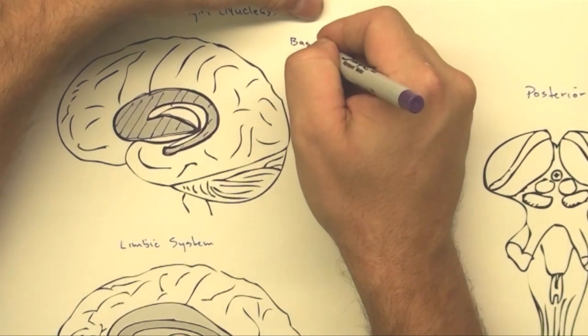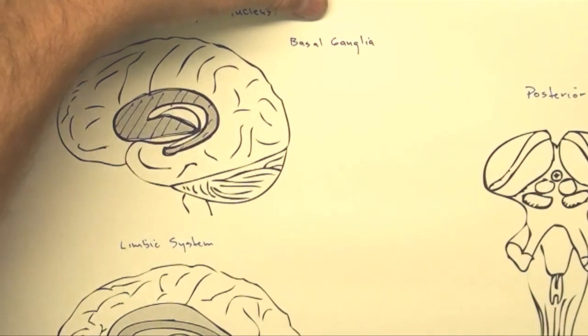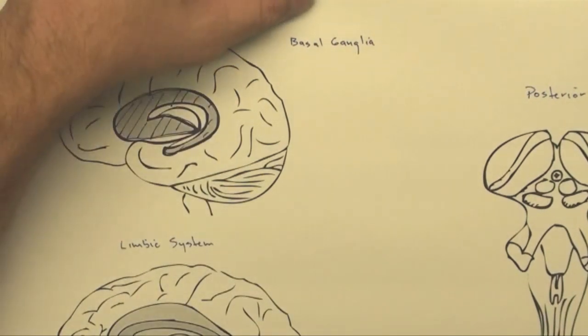And what the basal ganglia does is it's kind of the boss of the motor system. Now we generally think of the motor system, we generally think in the brain that the cortex is the boss. But when it comes to motor, the basal ganglia is kind of the boss.